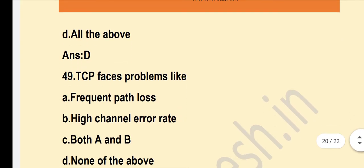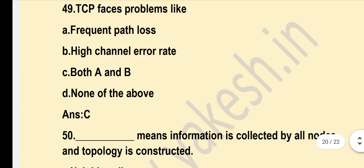Next question: TCP faces problems like? Option C — Both A and B — is the correct answer: frequent path loss and high channel error rate. Both options A and B are correct.